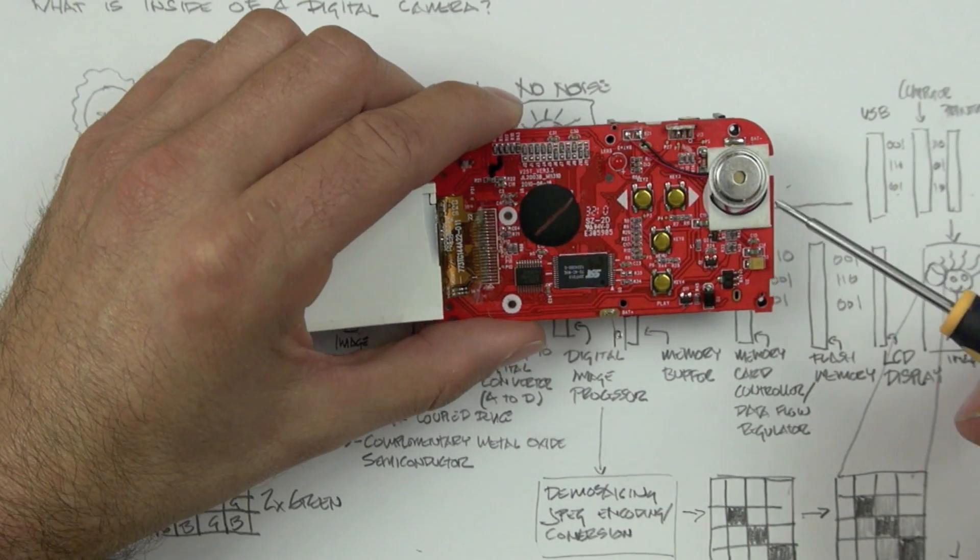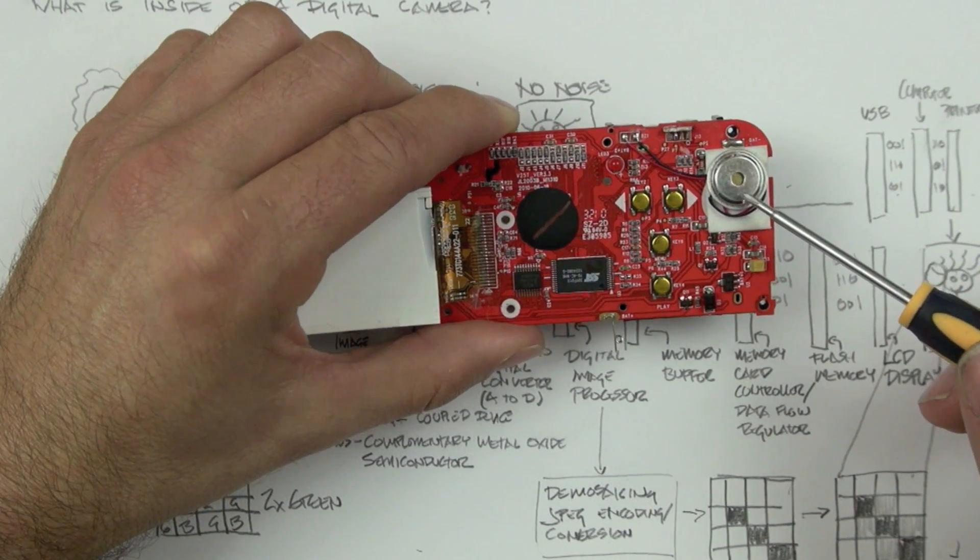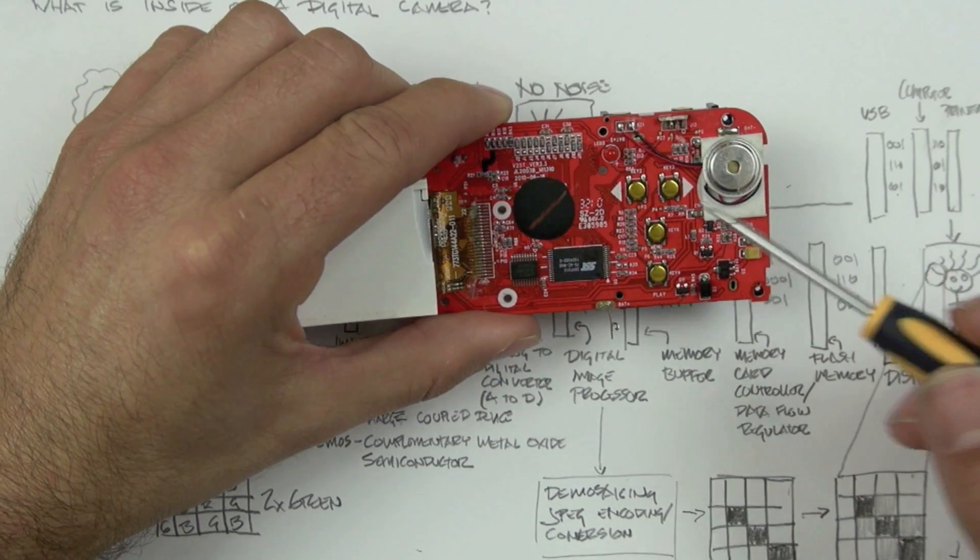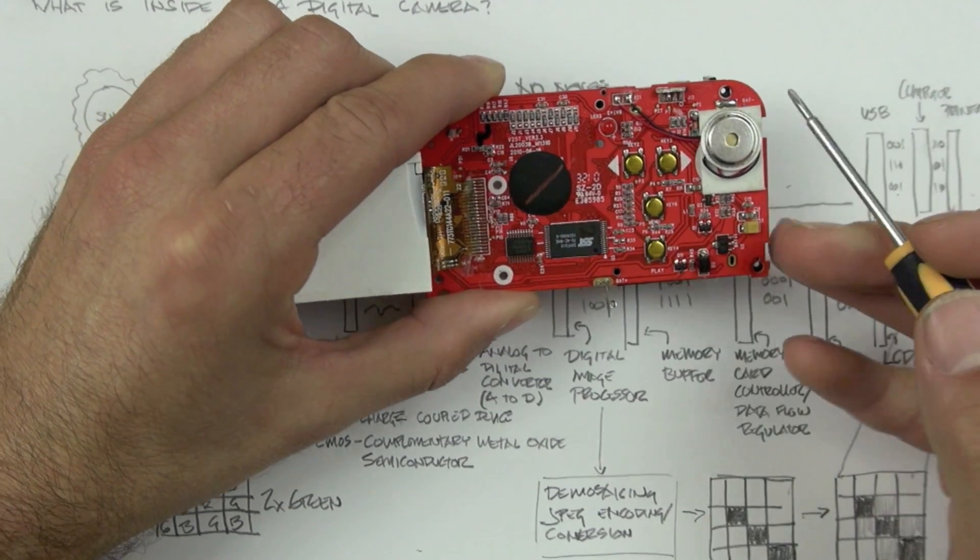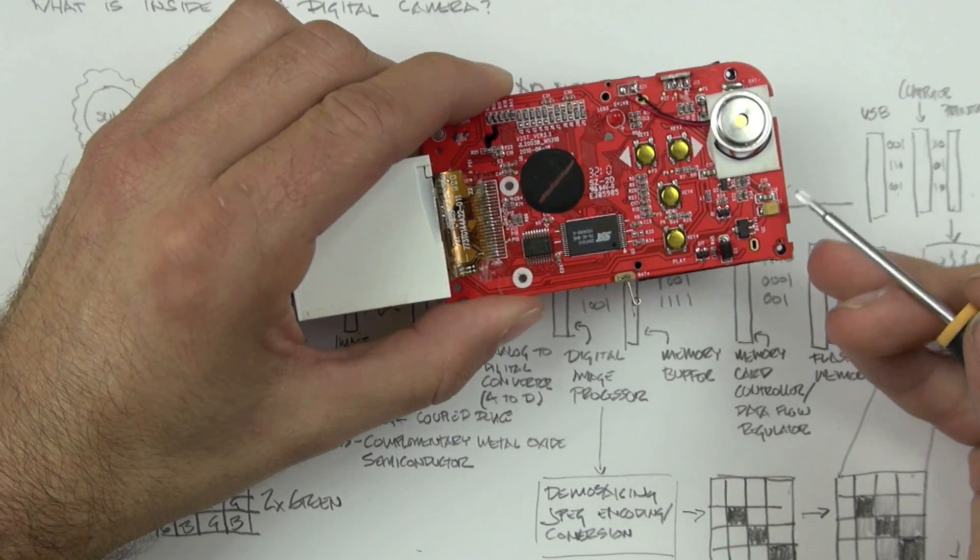Let's take a look at some other components. This is the speaker. It's a piezo speaker. And it produces a high-frequency sound when you push the buttons. And that just gives you some auditory feedback to let you know that the button has been successfully depressed.